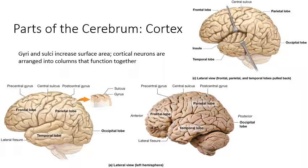The most prominent aspect of the cortex would be all the squiggles — those ridges are gyri, and the depressions between them are sulci. The purpose of these gyri and sulci is to increase the surface area of the cortex. Neurons in the cortex are arranged into columns where every neuron in a column is related to the same function — more columns means more functions and more processing power. The sheep brain has far fewer and less pronounced gyri and sulci, giving it much less cortical surface area since it doesn't need as much intense processing.